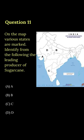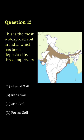In this question, Sugarcane's leading producer is Uttar Pradesh, so option B is the answer. This map is asking about the most widespread soil, which is alluvial soil — option A.